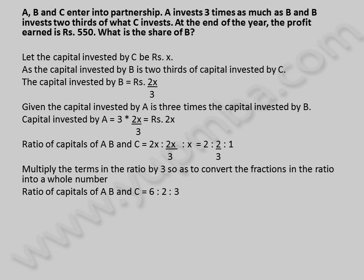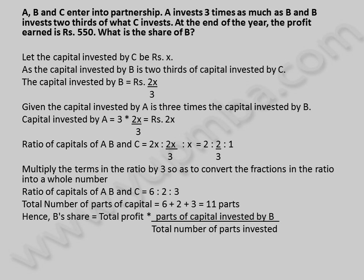Ratio of capitals of A, B, and C is equal to 6 : 2 : 3. Total number of parts of capital is equal to 6 plus 2 plus 3, which equals 11 parts. Hence, B's share is equal to total profit multiplied by parts of capital invested by B divided by total number of parts invested, which equals 550 into 2 by 11 rupees, giving 100 rupees. The share of B is 100 rupees.